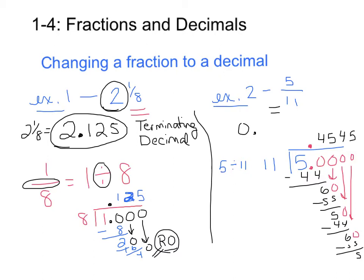So basically, this cycle will continue. Therefore, I can say that my decimal, that 5 elevenths of the decimal is 0.45, where the 4 and 5 is repeated. So this will become my answer.